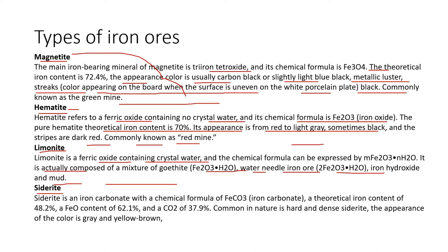Siderite is an iron carbonate with chemical formula FeCO3. The theoretical iron content is 48.2%, FeO content is 62.1%, and carbon dioxide content is 37.9%. It is common in nature and is hard and dense. The appearance color of siderite is grey and yellow-brown.